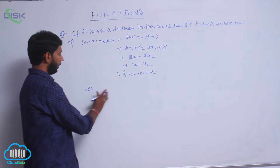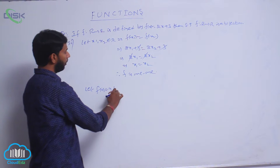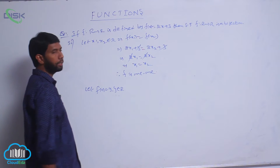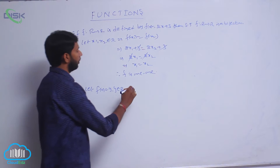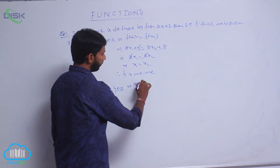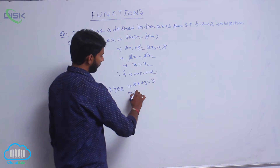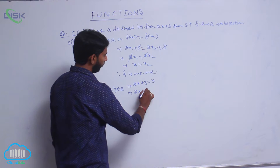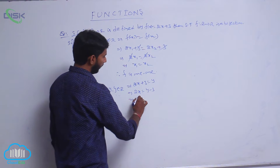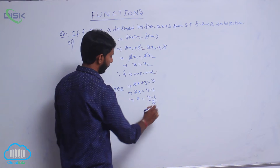Let f of x is equal to y, where y belongs to R. That implies 2x plus 3 is equal to y, so 2x is equal to y minus 3, and x is equal to (y minus 3) by 2.